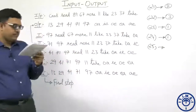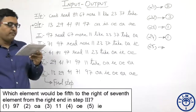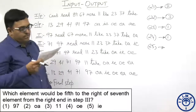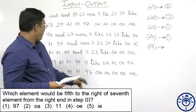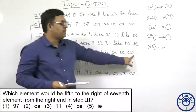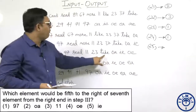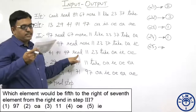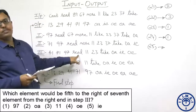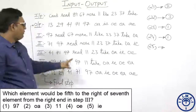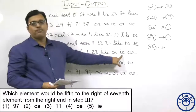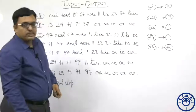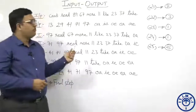Which element would be 5th to the right of the 7th element from the right end in step 3? Step 3: 7th element from the right end — counting: 1, 2, 3, 4, 5, 6, 7 — is 'read'. Then 5th to the right of read: 1, 2, 3, 4, 5. The 5th element is IE, and IE is given in option number 5.